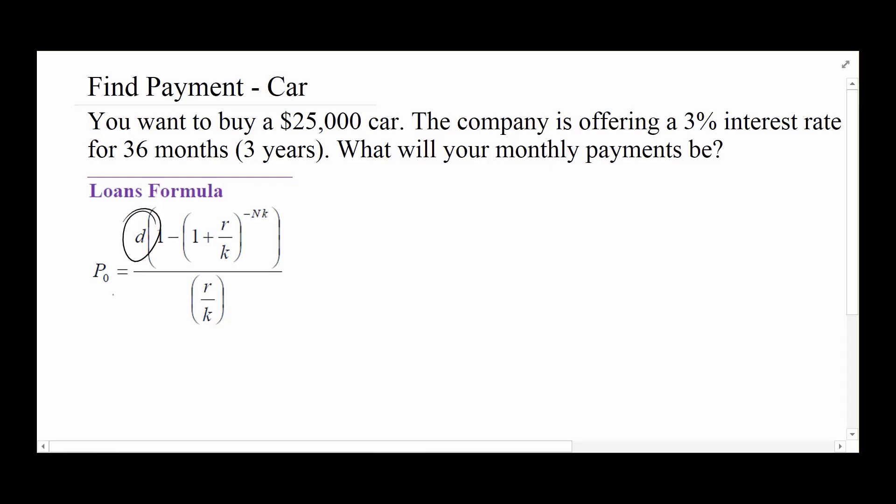Our goal is to solve for the monthly payments, so we can do similar to what we had done with annuities. Let's solve this by multiplying both sides of the equation by R over K over 1 minus 1 plus R over K to the negative NK. The idea here is that on the right side, the R over Ks would divide out. It would be on the left side with the P sub-zero. All that would be left on the right side is the D. When we multiply on the left side, we're going to get the P sub-zero times the R over K, and on the bottom we're going to have this 1 minus 1 plus R over K to the negative NK.